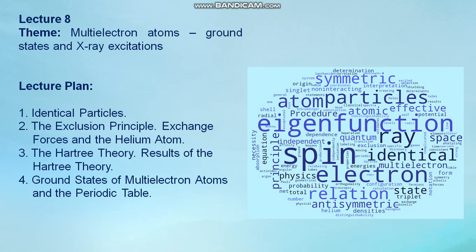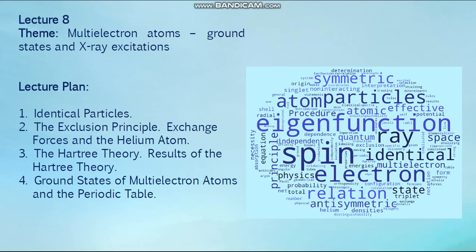Before studying multi-electron atoms, we must discuss an important topic of quantum mechanics that does not enter into the theory of one-electron atoms. This concerns the question of how to give an accurate quantum mechanical description of a system containing two or more identical particles such as electrons. Discussing this will lead us to quantum mechanical phenomena that have absolutely no classical analogues.